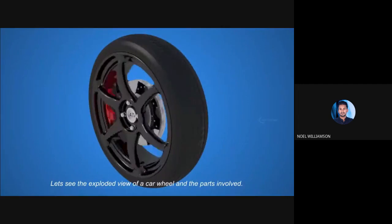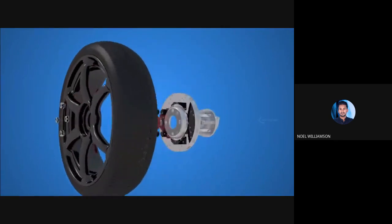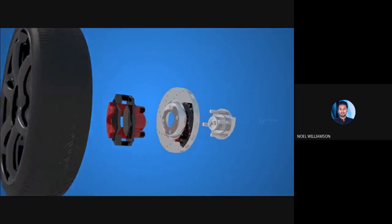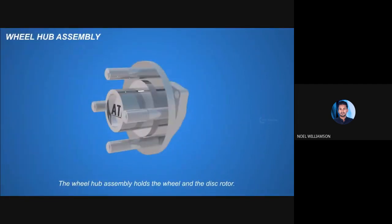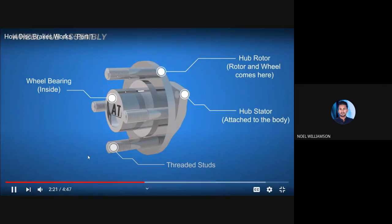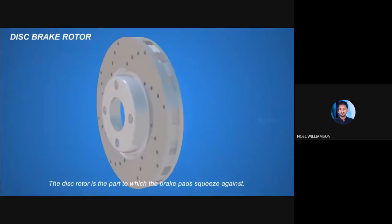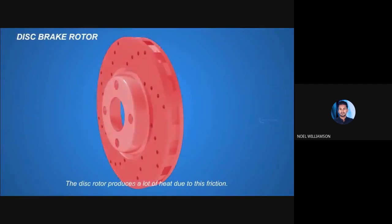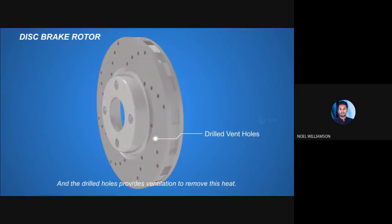Let's see the exploded view of the car wheel and the parts involved: the wheel hub assembly, the disc brake rotor, the brake caliper assembly, the wheel, and the lug nuts. The wheel hub assembly holds the wheel and disc rotor, and the bearing inside allows their smooth rotation. The disc rotor is the part against which the brake pads squeeze, creating friction that retards wheel rotation. The disc rotor produces a lot of heat due to friction, and drilled holes provide ventilation to remove this heat.